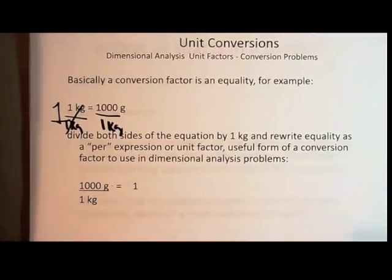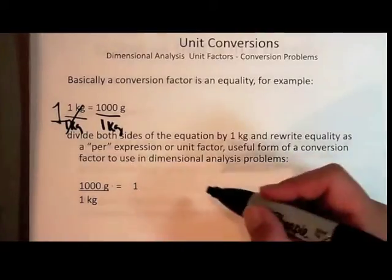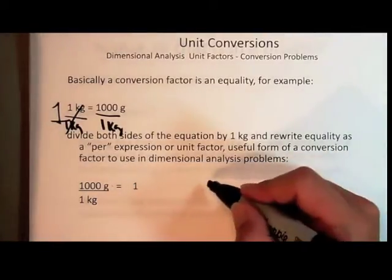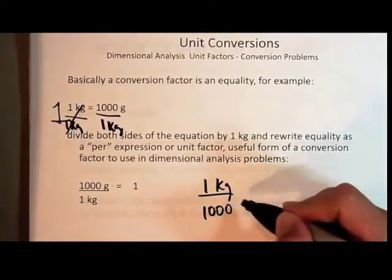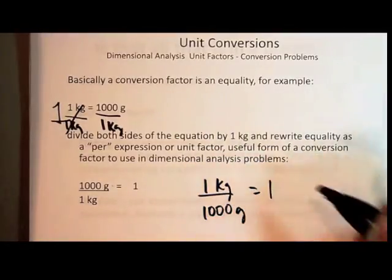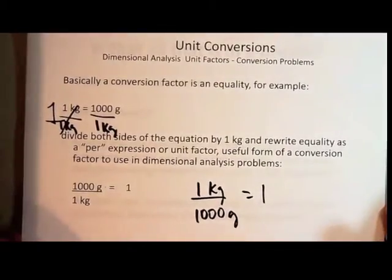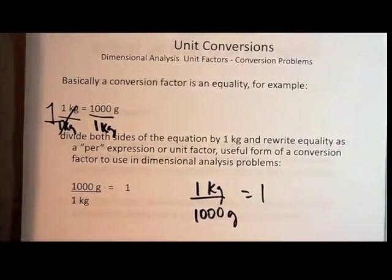You can also create a unit factor the other way. It's the same thing - one kilogram divided by 1,000 grams is also equal to one. It doesn't matter which side you divide by which side. We'll be coming back to that quite a bit throughout the semester.